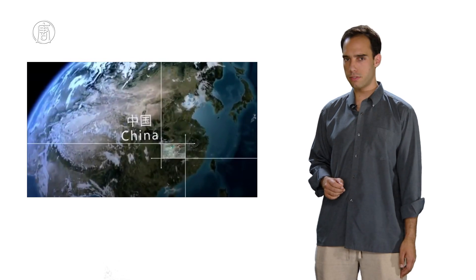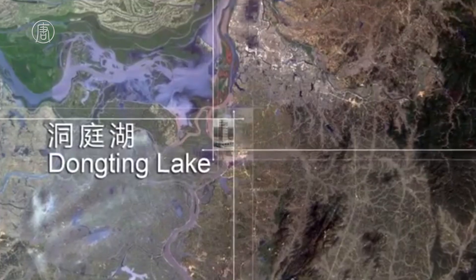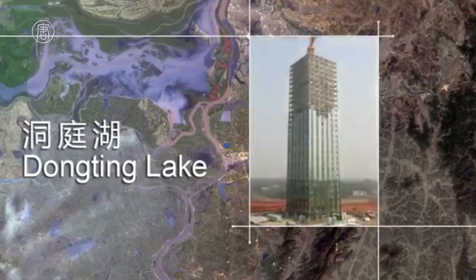A company in China named Broad Sustainable Building Corporation has taken on the building project. The tower will be called Sky City One when it's completed, and by the sound of the name, there will be more to follow.